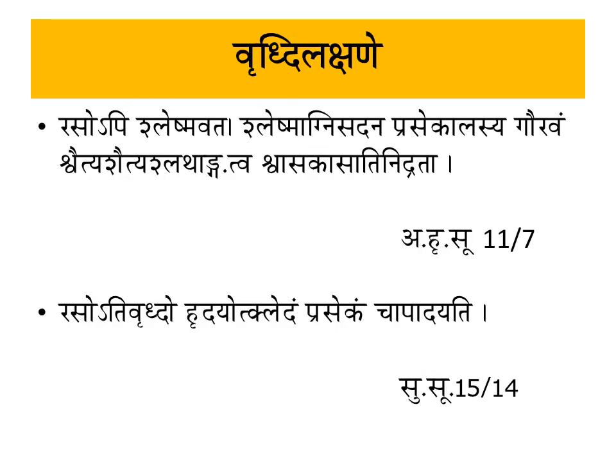Now we will study Rasa Vriddhi Lakshana — manifestations of increased Ras Dhatu. 'Raso Ati Vriddho Radeyam Utkledam Praseikam cha Apadiyat' — when Ras Dhatu is excessively increased, symptoms include Utkled (nausea) in the cardiac region, Praseika (hypersalivation — excessive flow of saliva from the mouth), Agni Sadanam (decreased digestive fire), Aalasya (lethargy), Gaurava (heaviness), Shwetya (pallor), Sithilangata (looseness of body parts), Shwas, and Ati Nidrata (excessive sleep).